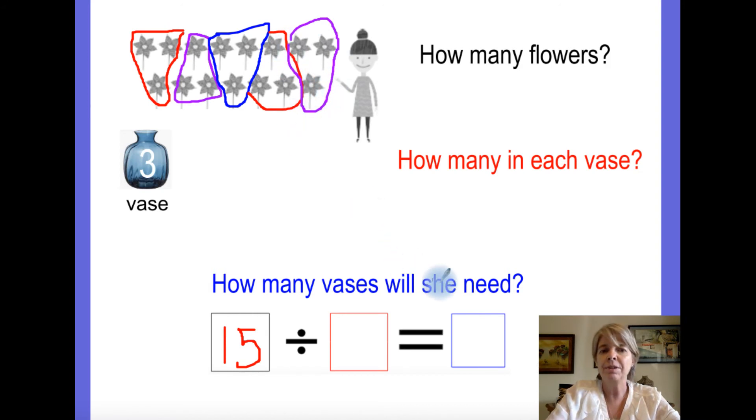So, she needs five. So first of all, we needed to write this here. Fifteen divided by three. She can put them in groups of three. So, all together, she needs five.